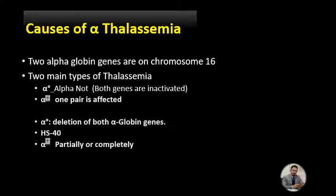Alpha-naught thalassemia is the form in which both genes are inactivated. It results from the deletion of both alpha globin genes. There are many different size deletions, one of which is particularly common in Southeast Asia and another in Mediterranean populations. Alpha-naught thalassemia may also result from deletion involving HS-40, the regulatory gene located 40 kb upstream from the alpha globin gene cluster.